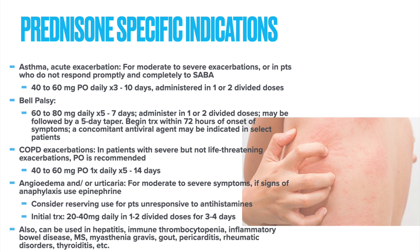In patients who are having a severe, however not life-threatening COPD exacerbation, oral prednisone again is indicated. A typical dosing is 40 to 60 milligrams one time a day for 5 to 14 days. Remember that the cardinal symptoms for a COPD exacerbation are increased dyspnea, increased sputum volume, and increase in sputum purulence.